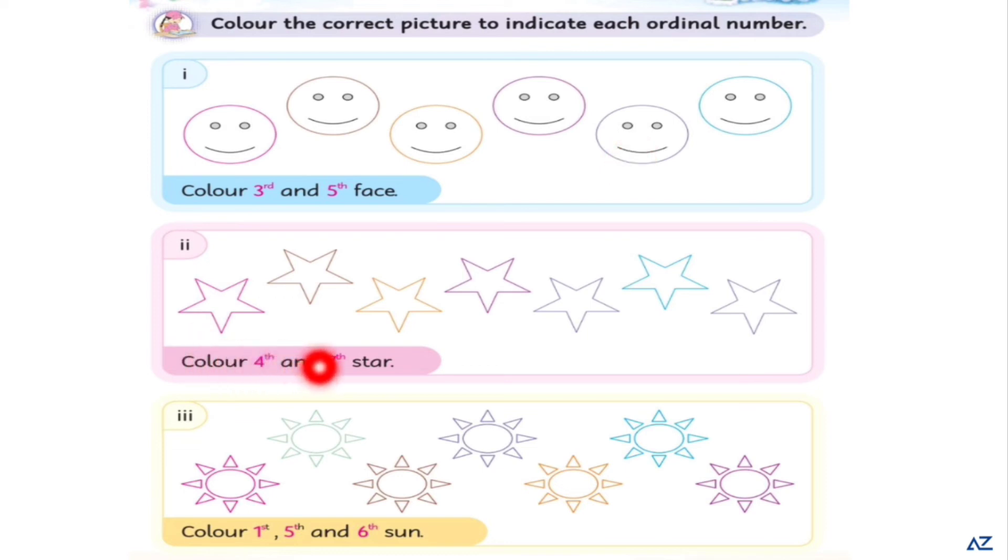Color fourth and seventh star. 1st, 2nd, 3rd, 4th, you will color in this. 5th, 6th and 7th, and color in this.